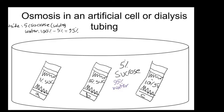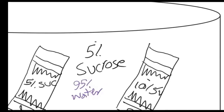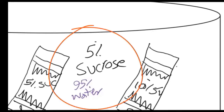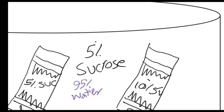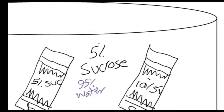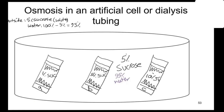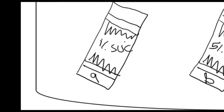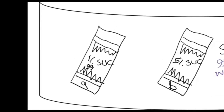I calculated here: outside you have 5% sucrose, so the water concentration outside is 95%. So for all three bags you have 95% water outside. But now you need to calculate the water concentration for bag A. As you see here, it has 1% sucrose, so the water concentration for bag A is going to be 99% H₂O.